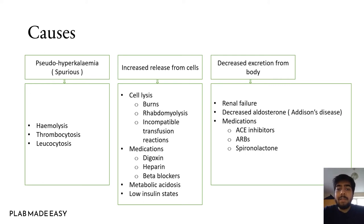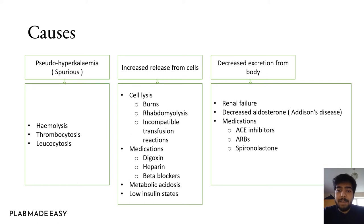The third mechanism is decreased excretion from the body, such as adrenal failure or Addison's disease, which leads to decreased aldosterone. Or it can be due to medications such as ACE inhibitors, ARBs, or spironolactone.